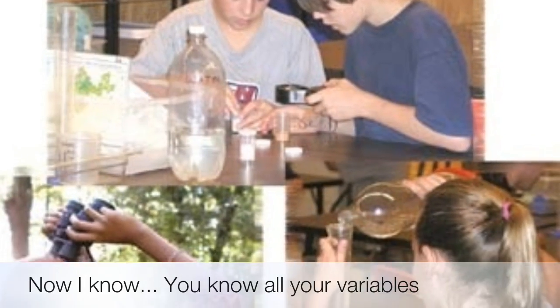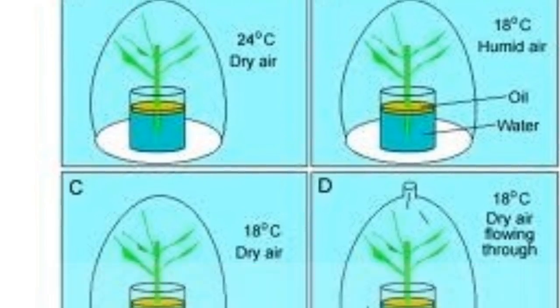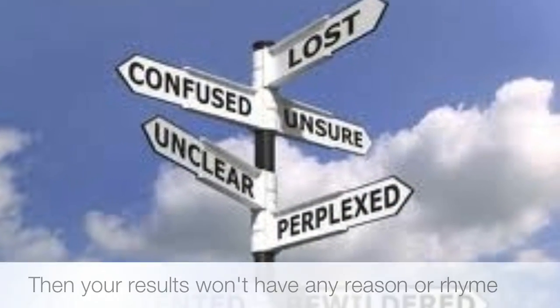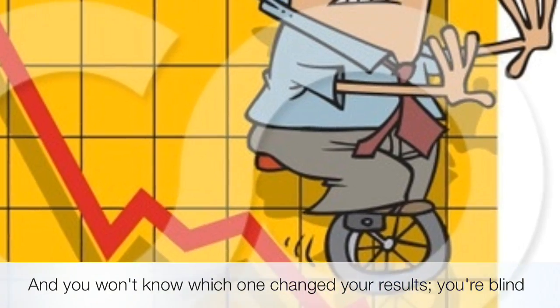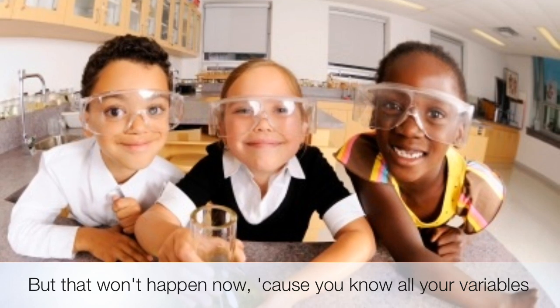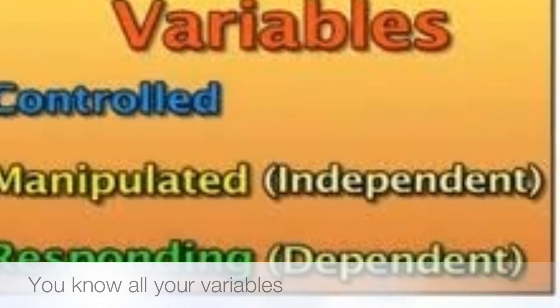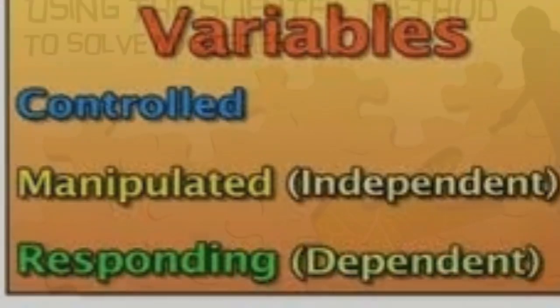Now I know. You know all your variables. If you change more than one at a time, then your results won't have any reason around. And you won't know which one changed your results — you're blind. But that won't happen now, cause you know all your variables.